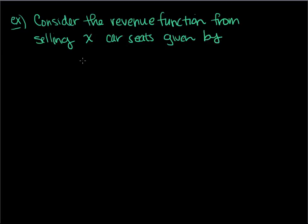so here's my function, revenue function again, that's the money that we collect. Let's say it's 60x minus 0.025x squared and we have the domain on x here. x can be between 0 car seats or 2400 car seats.